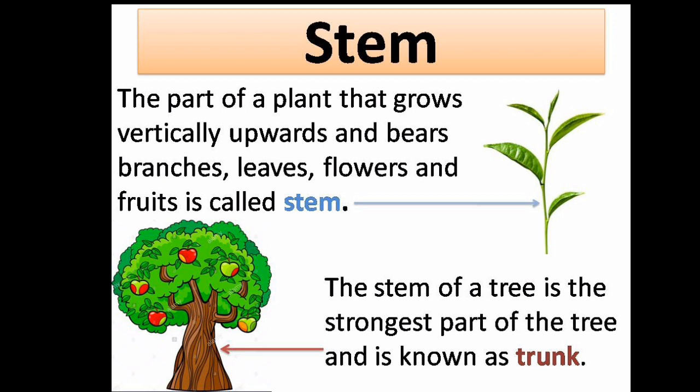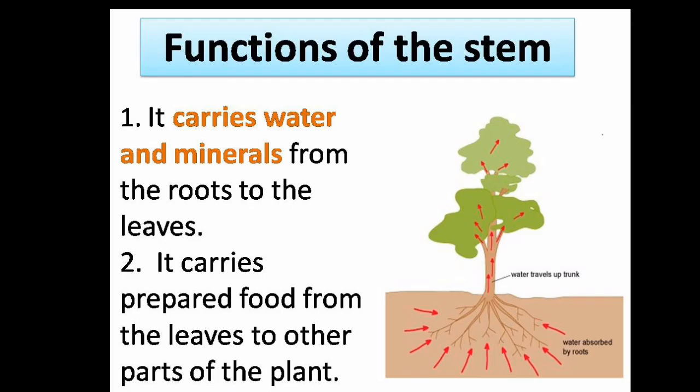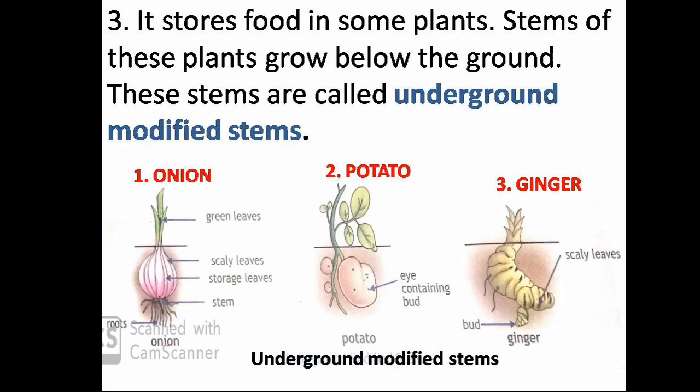The functions of the stem: it carries water and minerals from the roots to the leaves. It also carries prepared food from the leaves to the other parts of the plant. The stem also stores food in some plants. The stems of these plants grow below the ground and are called underground modified stems. Examples include onion, potato, and ginger.